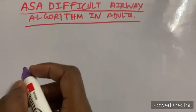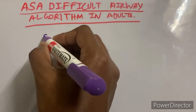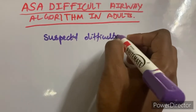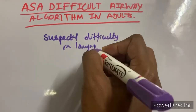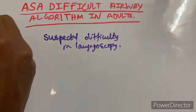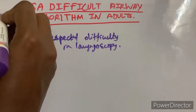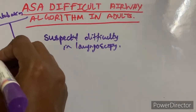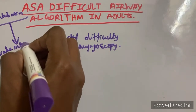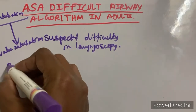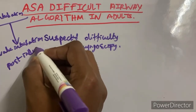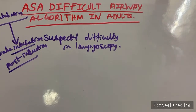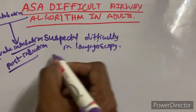The first step in the ASA difficult airway algorithm is to suspect if the patient has a difficult airway. Before pre-intubation, the clinician must decide whether to plan for awake intubation or post-induction intubation.